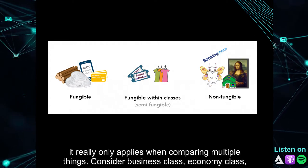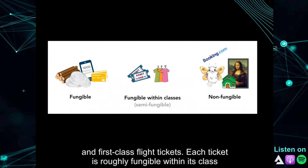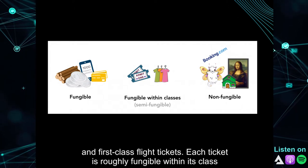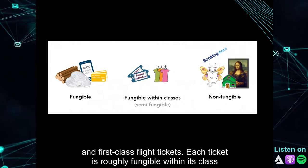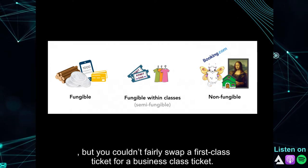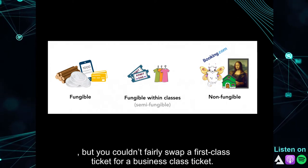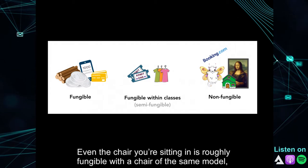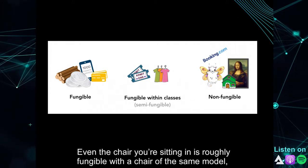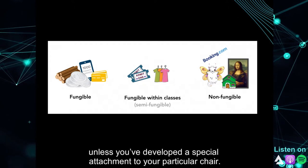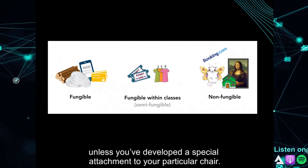Fungible assets are actually the odd ones out. A currency is a classic example: five dollars is always five dollars, no matter the serial number or the specific bill. Consider business class, economy class, and first class flight tickets — each ticket is roughly fungible within its class, but you couldn't fairly swap a first class ticket for a business class ticket. Even the chair you're sitting in is roughly fungible with the same model, unless you've developed a special attachment to your particular chair.